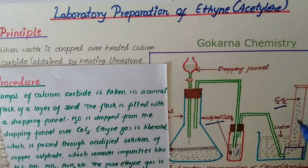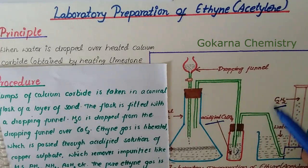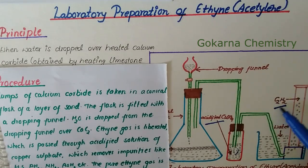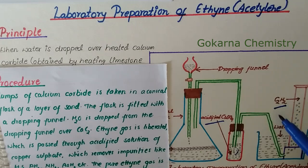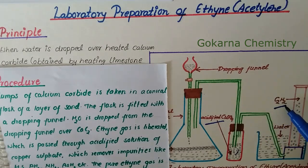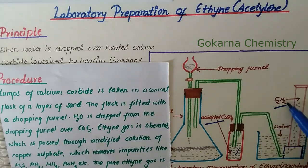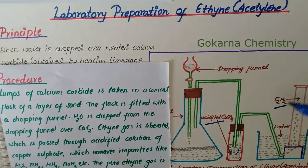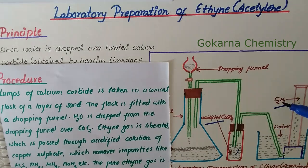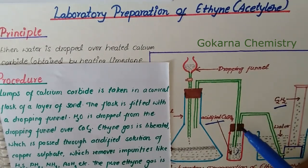Now we study the properties of ethyne. In physical properties, C₂H₂ is a colorless and odorless gas, but if there is a garlic odor, it indicates the presence of impurities. The melting point of ethyne is minus 84 degrees Celsius. It burns with a luminous flame and forms an explosive mixture with air.